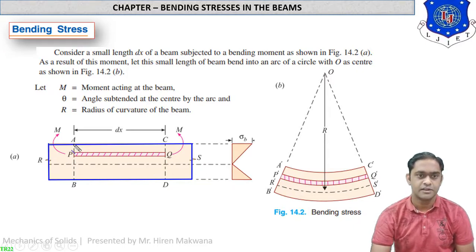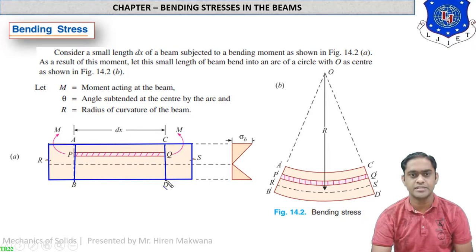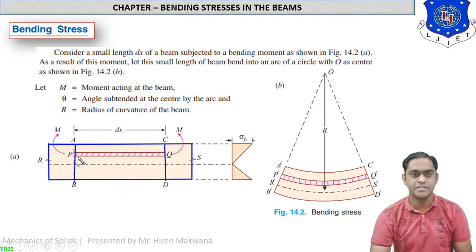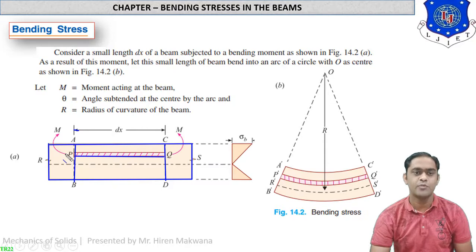From this we have cut two sections: section 1 is AB and section 2 is CD. Between AB and CD, we are cutting a horizontal strip from the beam — that is PQ. You can see it is PQ, having length dx, as shown in the figure. Now a bending moment is applied on this beam.